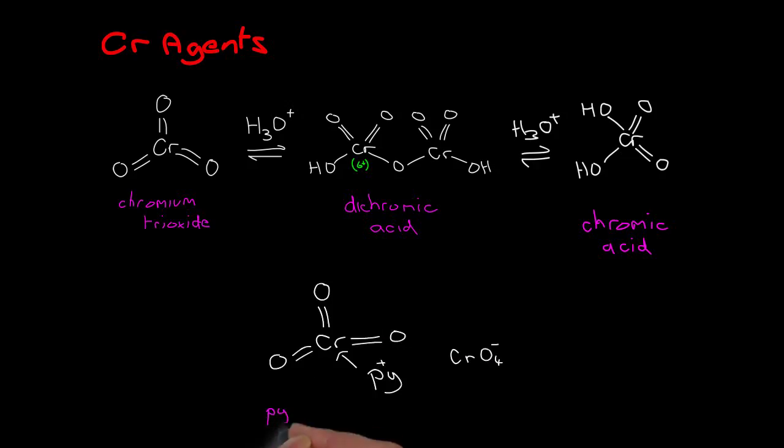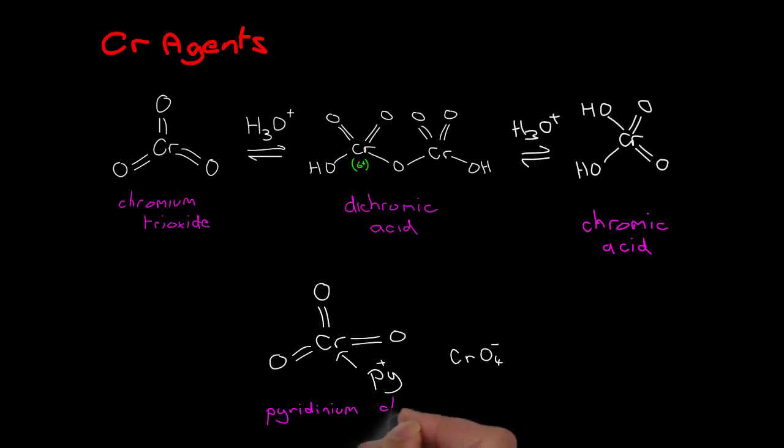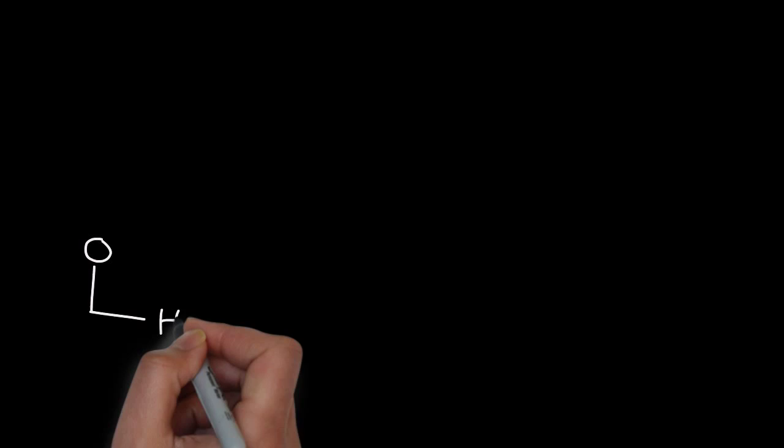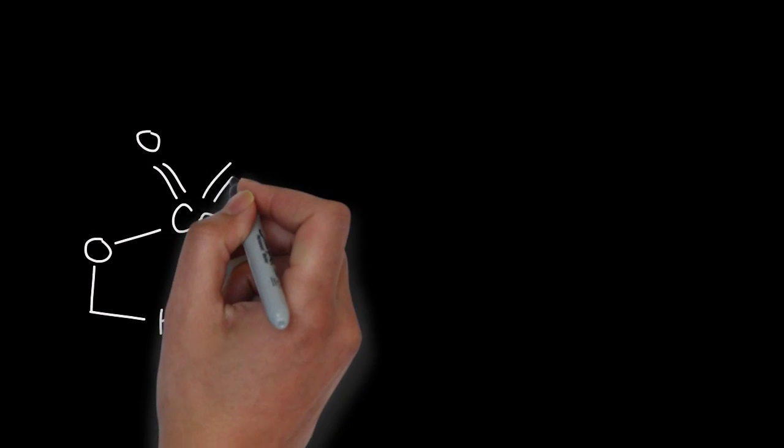We can solubilize chromium trioxide by making a pyridine adduct. So we have an arsenal of chromium agents to use, but mechanistically, all these agents behave in the same way.